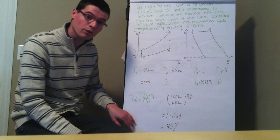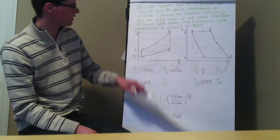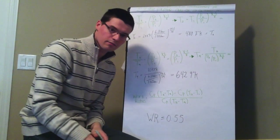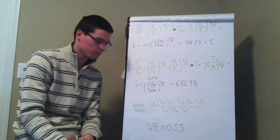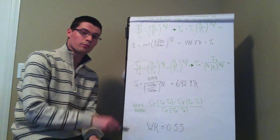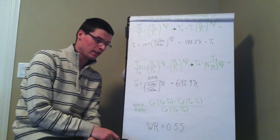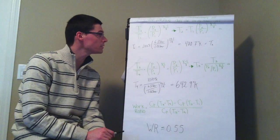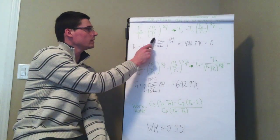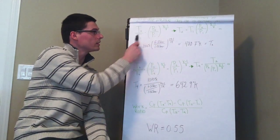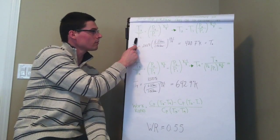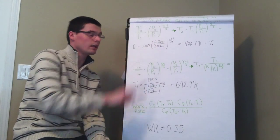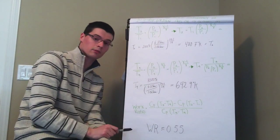Now say we want to find the work ratio for this particular cycle. Now in order to do that, we're going to need to have all the temperatures. So from using our ideal gas PV and T relationships, we can see temperature and pressure related by this formula right here. Now we have T1, we have P1, and we have P2 as well as gamma, which is a constant.